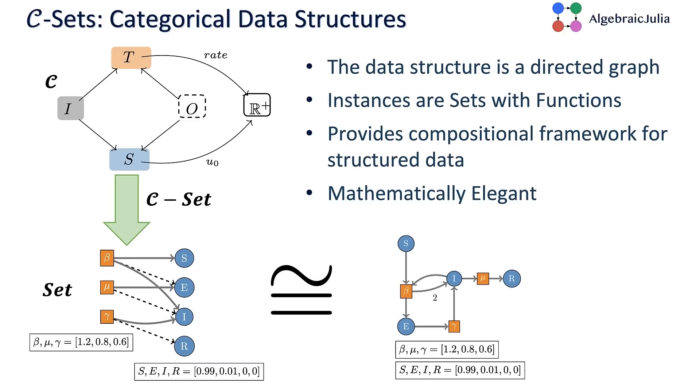Our Petri net example is a categorical data structure. You have some states and some transitions and input-output relationships between what states are inputs or outputs of which transitions. These are Petri nets with initial value problems. Every transition has a rate and every species has an initial concentration or an initial population, if you're thinking epidemiological. What is a Petri net initial value problem? It's a choice for every object in C, a set of things of type C. A set of species, a set of transitions, a set of arrows for inputs, and a set of arrows for outputs.